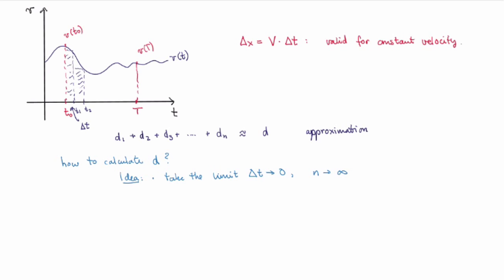If I do that, then I will get a precise calculation of the area under the curve, or the distance traveled by my object. This process is called integrating, or taking the integral of the function. It also has a special notation: if I calculate the distance d — the area under the velocity function between t₀ and capital T — I write this as the definite integral between t₀ and capital T of the velocity function. We will come back to explain exactly why this is a good notation for this process.